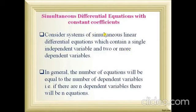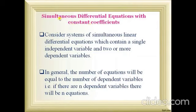We have discussed higher order linear differential equations, method of variation of parameters, and Cauchy-Legendre types. For all those types, we dealt only with linear differential equations. For this particular topic also, we are going to deal only with linear differential equations. But in this type, we may have more than one equation, which is why we call it simultaneous differential equations with constant coefficients — linear differential equations which contain a single independent variable and two or more dependent variables.